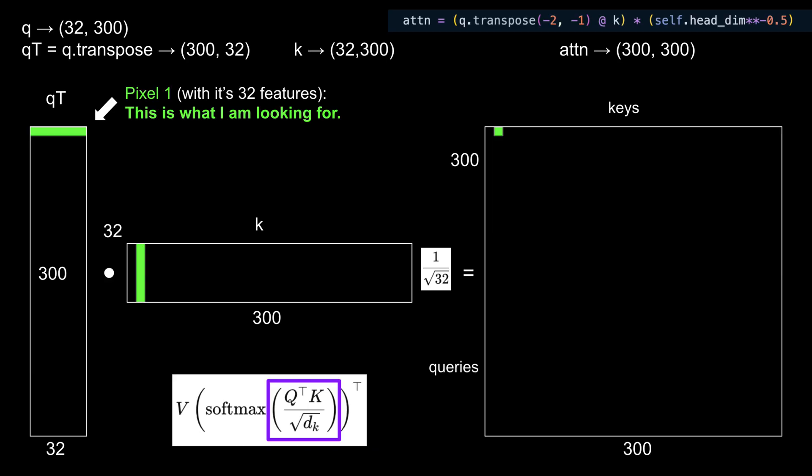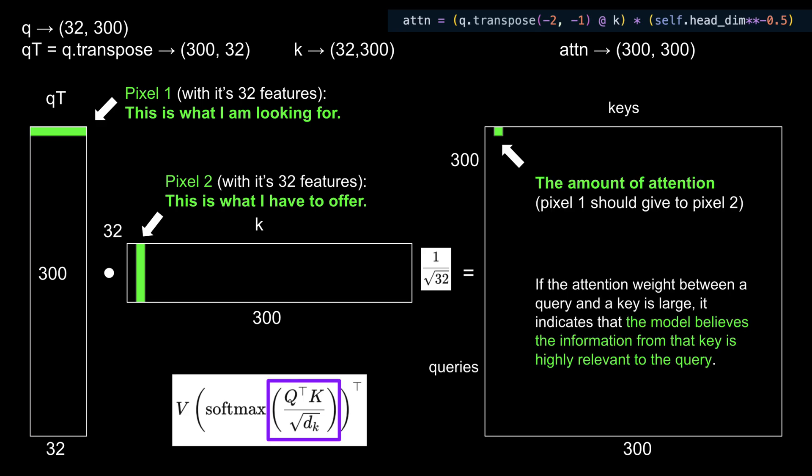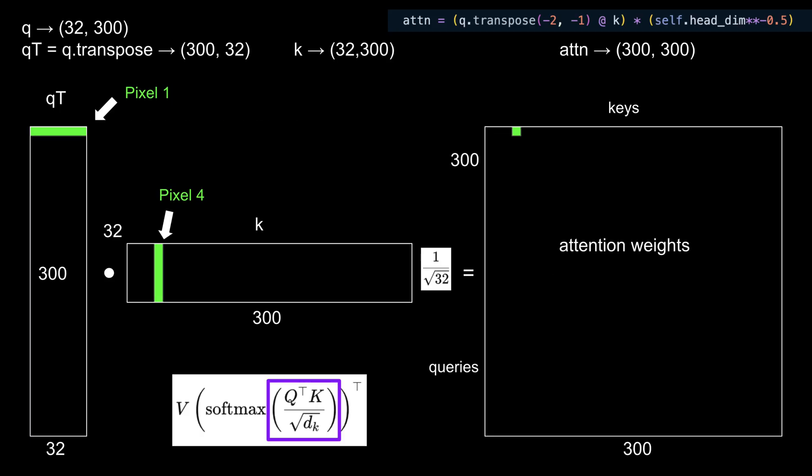Here's an intuitive example. Pixel 1 query asks, 'this is what I'm looking for.' Pixel 2 key responds, 'this is what I have to offer.' The dot product between pixel 1 and pixel 2 determines how much attention pixel 1 should give to pixel 2. A high attention weight indicates that the key's information is highly relevant to the query. This process is repeated for all other pixels: pixel 3, pixel 4, and so on. Essentially, every pixel compares itself to every other pixel in the grid.